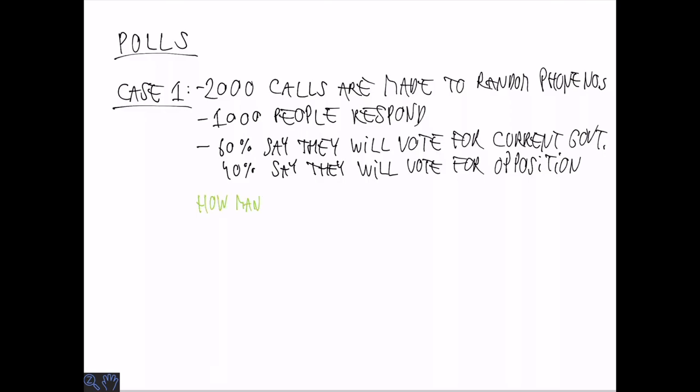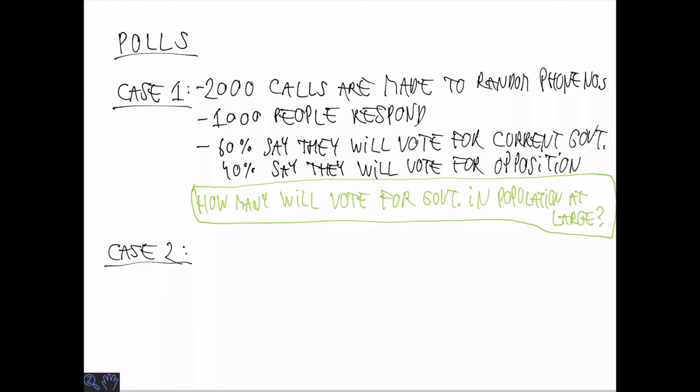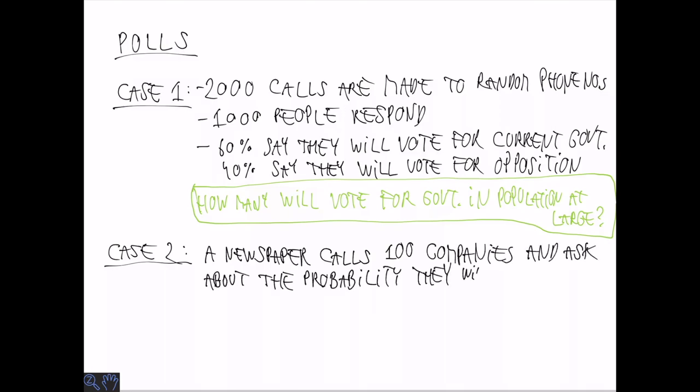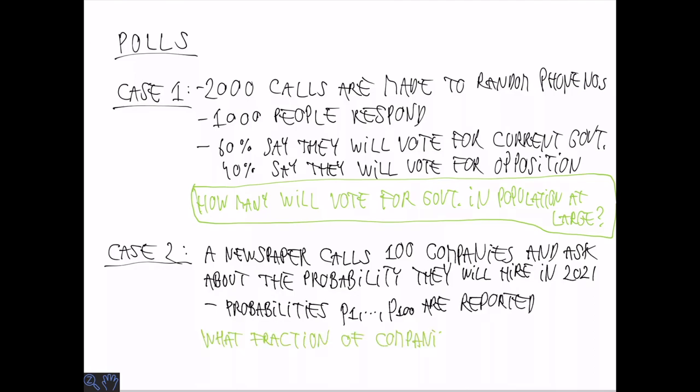And the rest 40% say that they will vote for the opposition. Now the question is, what can we say about the general population? How many of them are going to vote for the current government? In the second case, a newspaper calls 100 companies and asks them what the probability is that they are going to make a new hire in 2021. So we get probabilities P1 through P100. And we may ask what fraction of companies among the 100 and overall do we expect will hire in 2021.